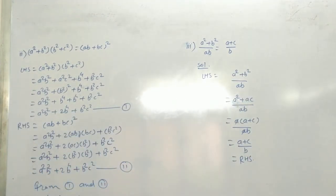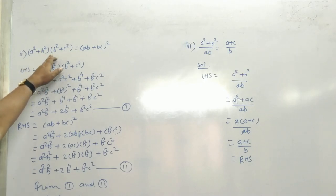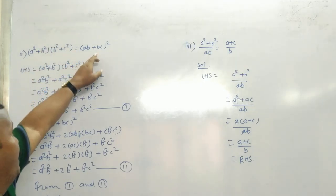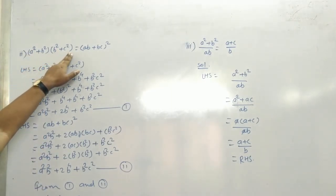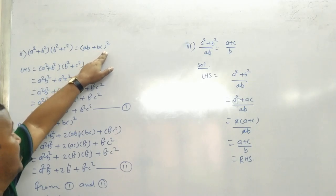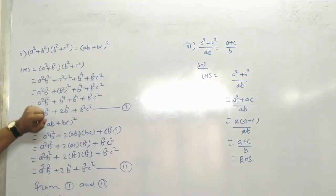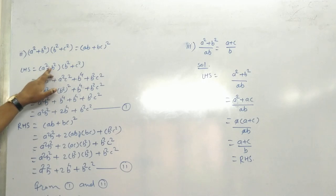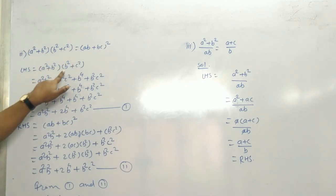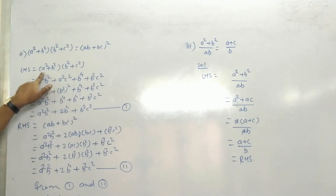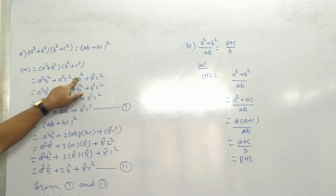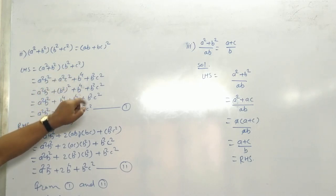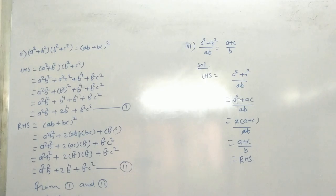Second sum देखो - इसमें क्या बताया है? B square is given, और prove करना है: A square plus B square into B square plus C square is equal to AB plus BC whole bracket square। LHS solve करते हैं: A square into B square = A square B square, plus A square into C square = A square C square, plus B square into B square = B raise to 4, plus B square into C square।